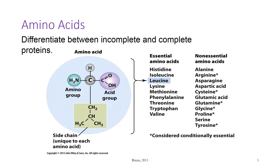Soy protein is the exception. As with carbohydrates and lipids, proteins contain carbon as well as nitrogen. All amino acids have the same structure: a central carbon with a hydrogen, an amino group, and an acid group. The final group is the side group that will vary, thus providing us with the 20 different amino acids.